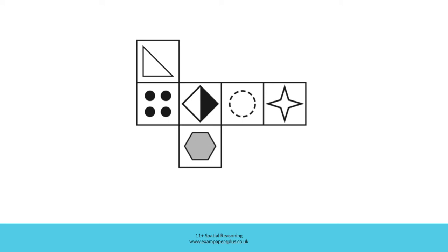These three faces would all be next to this one if it was the uppermost side. Then think about how you would fold here, meaning that this edge and this edge would meet one another. That would mean that this face would also be next to this one. So, if this face was uppermost, then these four faces would all be next to it around the sides, and that means that this face would be at the bottom or underside of the cube.